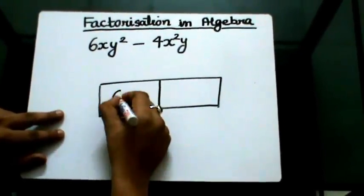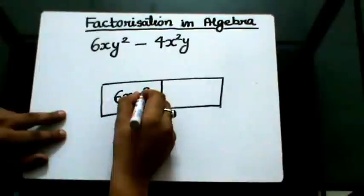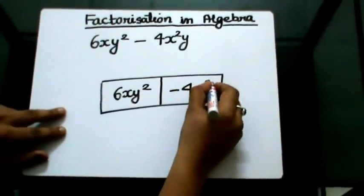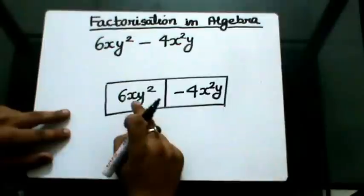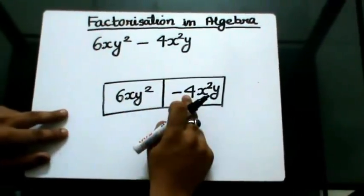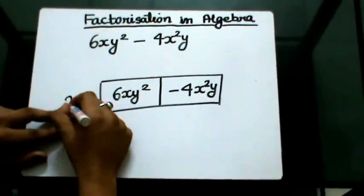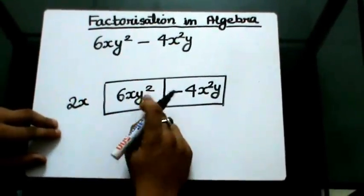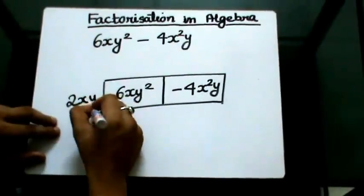The first term here is 6xy², and the second term here is -4x²y. Now between 6 and -4, I have 2. Between x and x², I have x, and between y² and y, I have y.